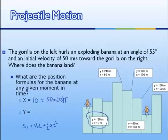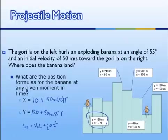Vertically, this gorilla starts at 120 meters. Its initial vertical velocity is 50 times the sine of 55, times time. And it will have vertical acceleration due to gravity. Assuming we're on Earth, we'll use one-half of negative 9.8 times t squared.